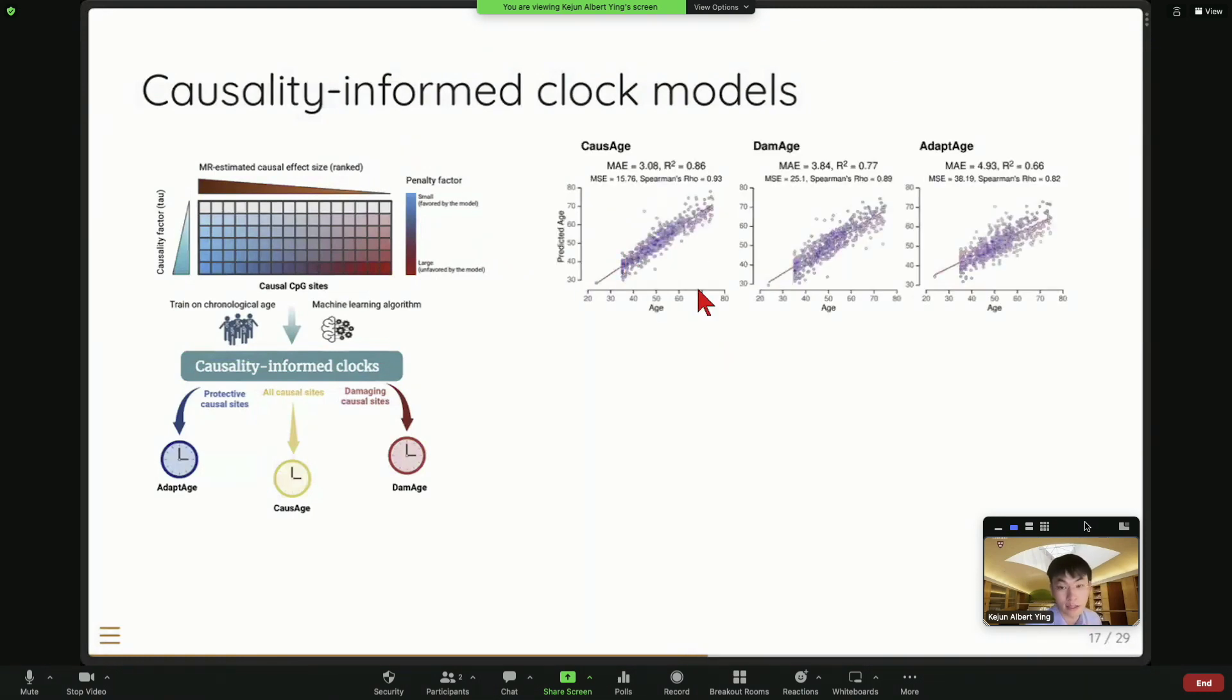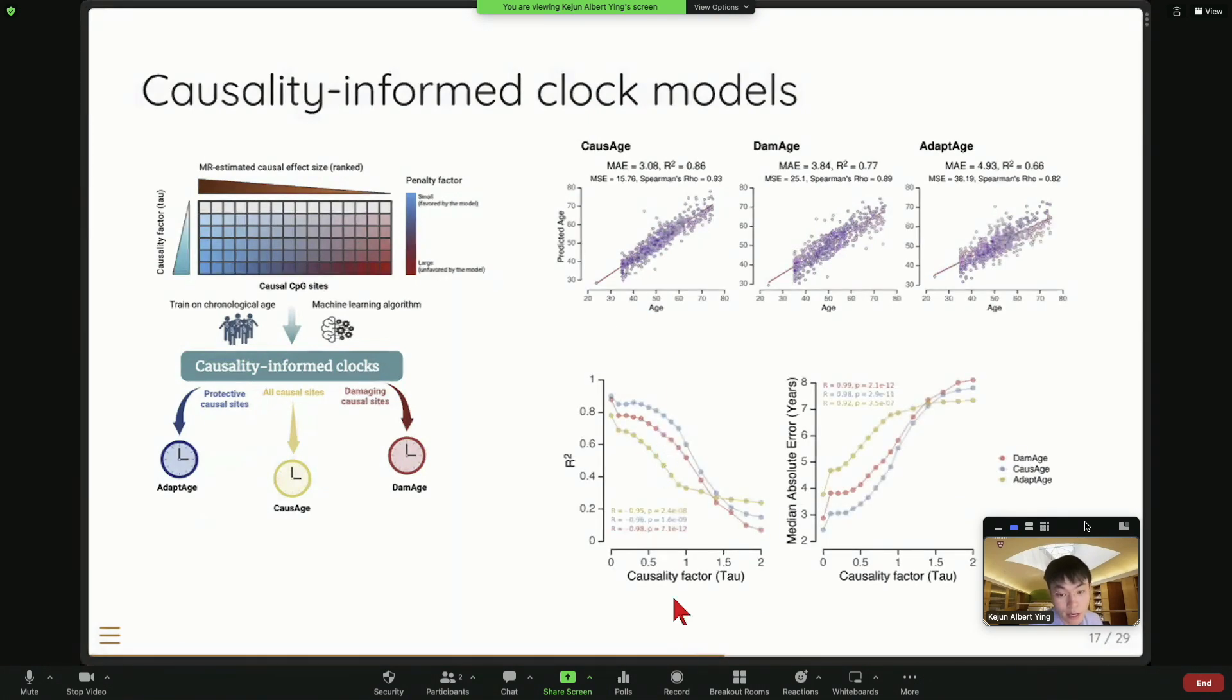So just to look at their predictive power, they look very similar. So in the general population, all these three clocks worked very fine in predicting the chronological age of the individuals. And we also found that when we increase, so this causality factor controls how much causal knowledge we input to the model. So we show that the more knowledge we import to the model, actually the performance of the model on the general population is worse. So this makes sense because the accuracy of the model depends on the correlation. And here we use this causal information, which is kind of disrupting a little bit.